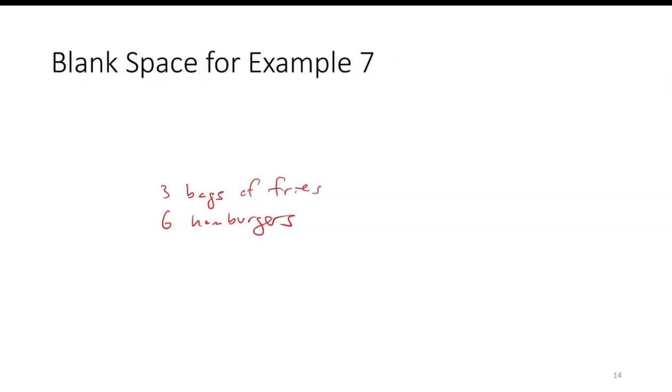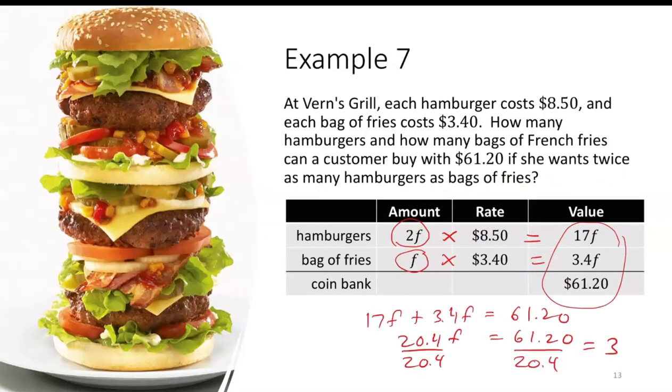And if you check, so in terms of cost, 3 times 3.40 is 10.20. And then 6 times, the hamburgers was 8.50, would be $51. And if you add those together, that comes out to be $61.20, which is the amount that she had.